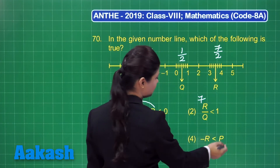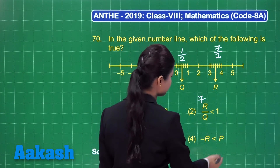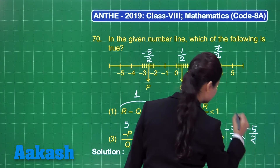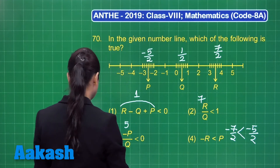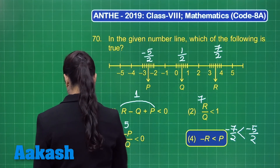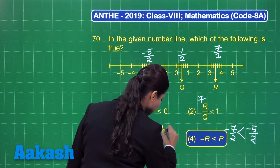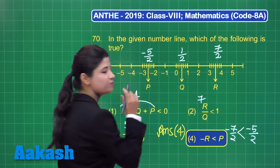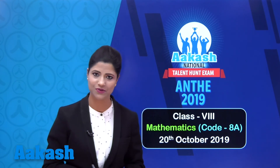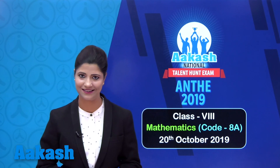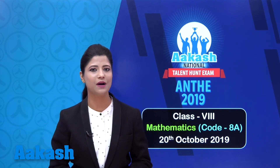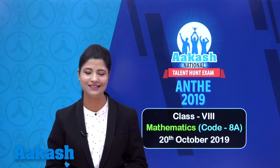For option 4, is minus R less than P? Minus R is minus 7 by 2 and P is minus 5 by 2. It is quite obvious that minus 7 by 2 is less than minus 5 by 2, so option 4 is the correct answer. This concludes the mathematics part of ANTHE 2019 code 8A paper of class 8. I hope you have well understood all the solutions and score really good marks in the ANTHE exam. All the best for your results. Thank you for watching.